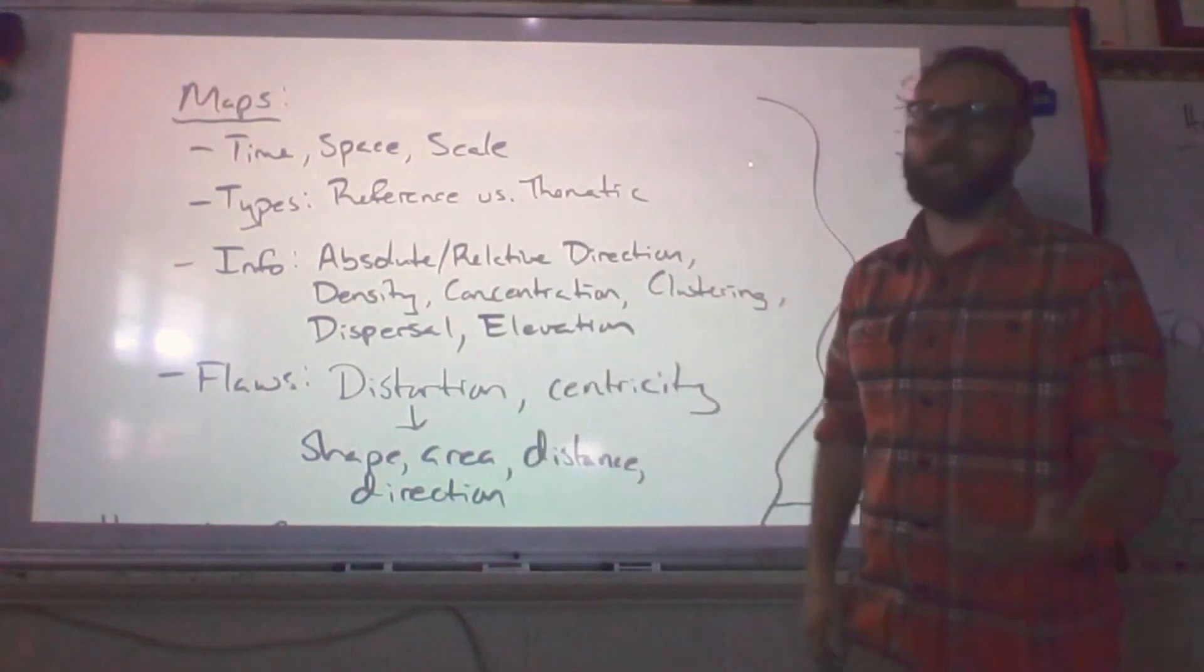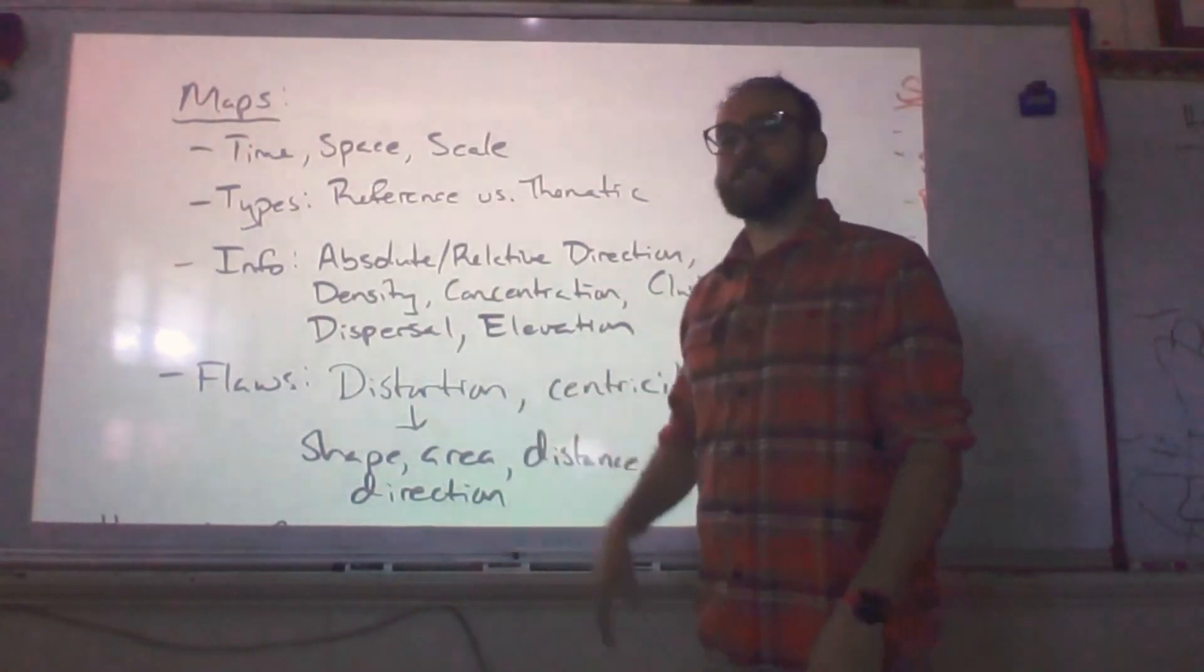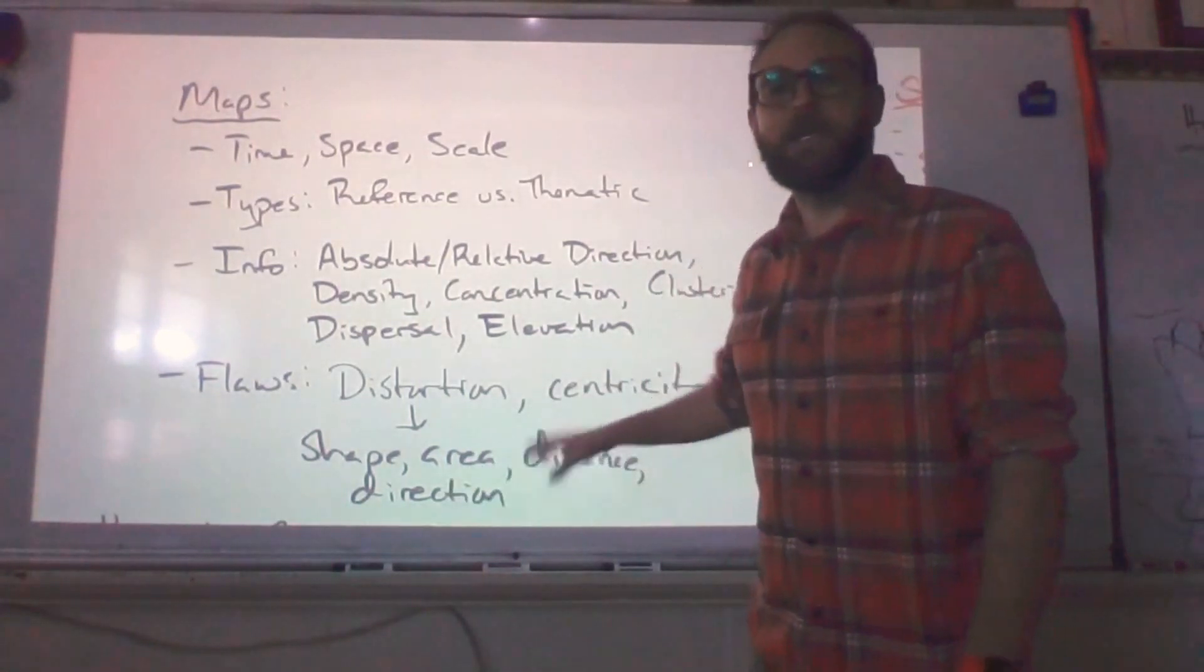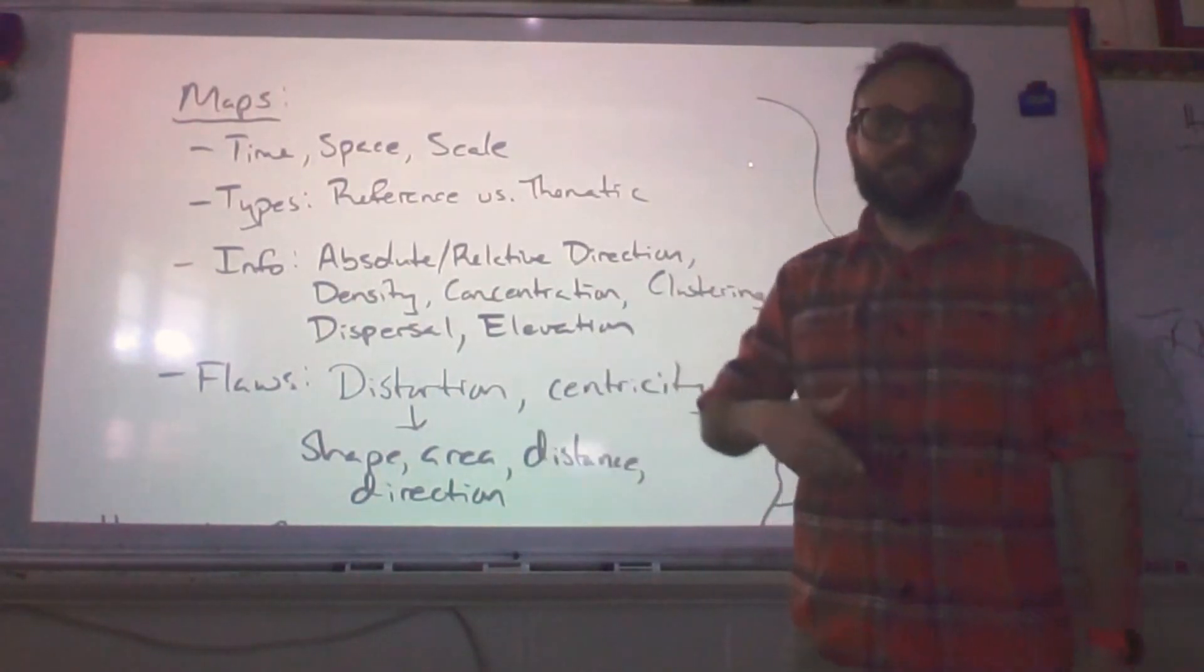And then clearly that distortion, I kind of forgot to bring this up, is related to shape, area, distancing, and direction. So any of those variables can be distorted variables. If you ever have to provide examples of what exactly is distorted, this is where you go.